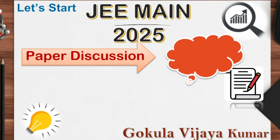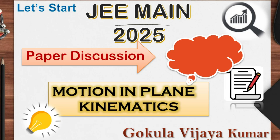Hello students, today we are going to discuss JEE Main 2025 questions from the chapter Motion in a Plane - Kinematics, April attempt. It's a continuation chapter from Motion in a Straight Line, so if you did not see that video, the link is in the description as well as the playlist. Do watch that video for better understanding. We are going to see all the questions in detail from the basics, so don't miss this video.